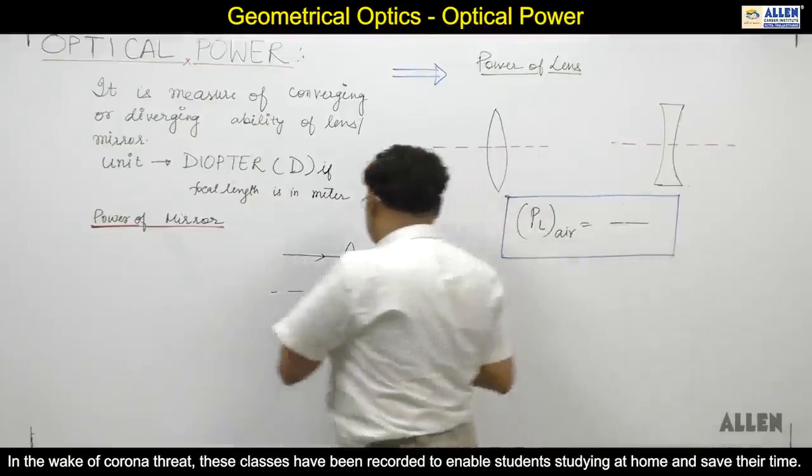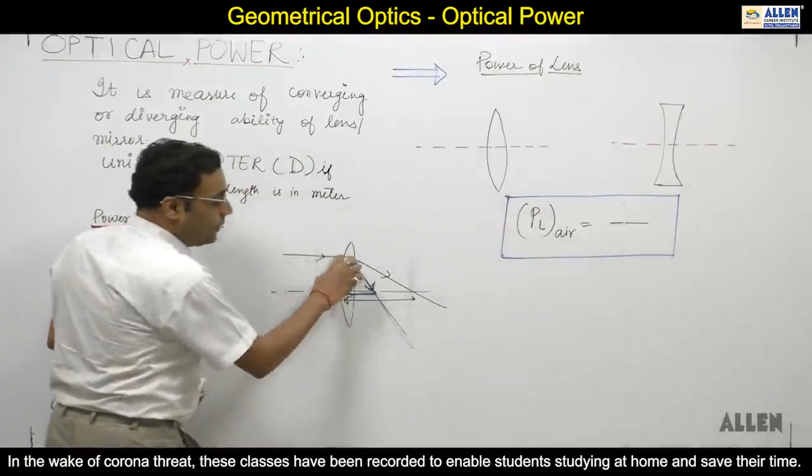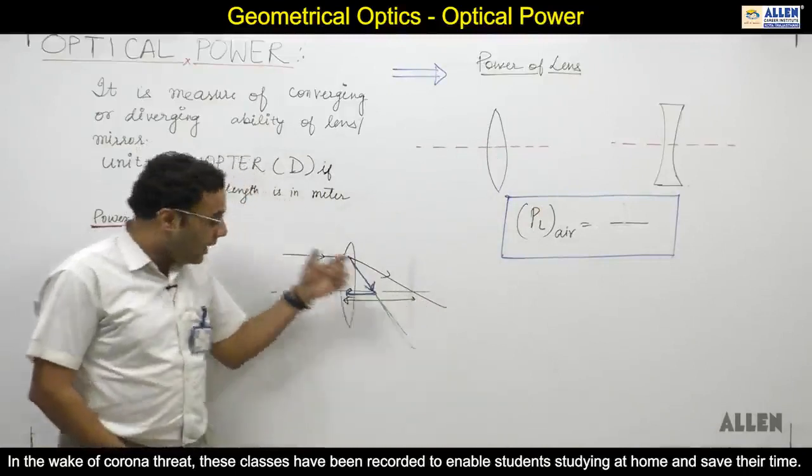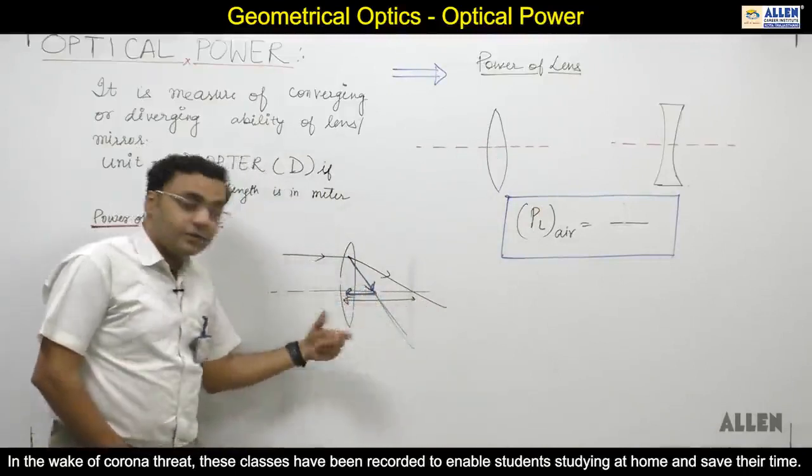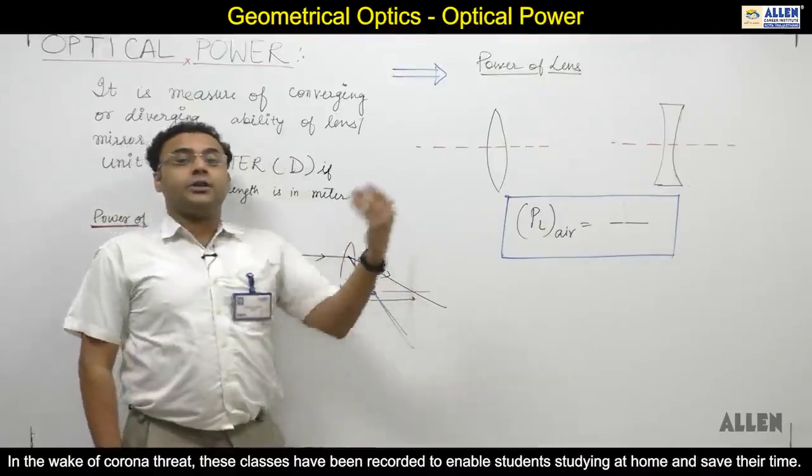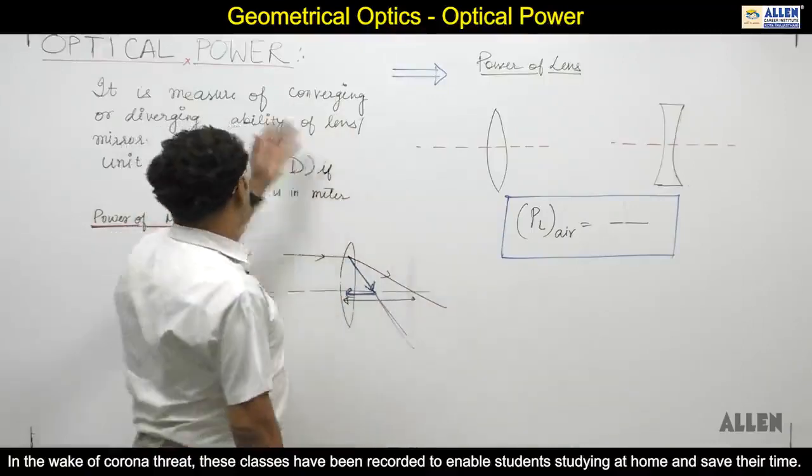If I put it in another color, then I will show you the blue distance versus the black distance. In the blue case, you have very quickly converged. If it has quickly converged, then its converging ability is much more. Converging ability is much more - power. This signifies power.